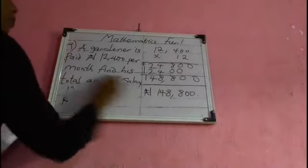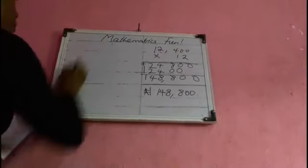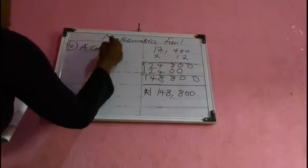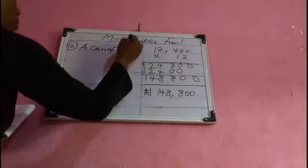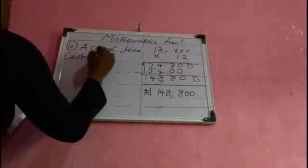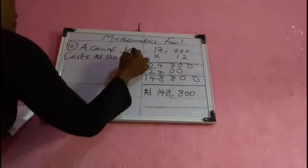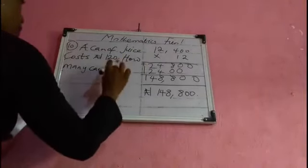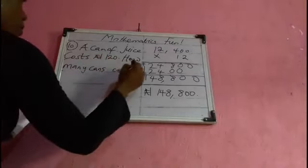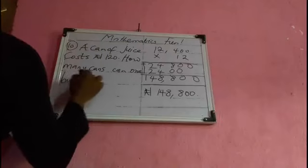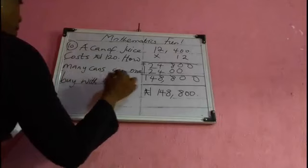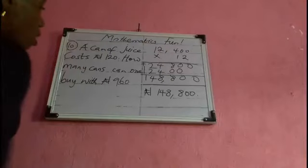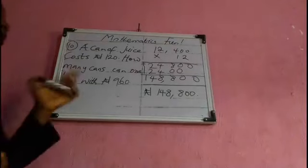Number ten: a can of juice costs 120 naira. How many cans can one buy with 960 naira? This is similar to the problem we did earlier.